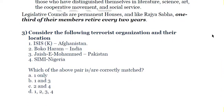The third question: consider the following terrorist organizations and their locations. First, ISKP — Afghanistan. Second, Boko Haram — India. Third, Jaish-e-Mohammed — Pakistan. Fourth, SIMI — Nigeria. Which of the above pairs is correctly matched? ISKP (Islamic State of Iraq and Levant, Khorasan Province) is based in Afghanistan, so the first is correct. Boko Haram is not in India but in Nigeria, so the second is incorrect. Jaish-e-Mohammed is a Pakistan-based organization operating in Kashmir, so the third is correct.